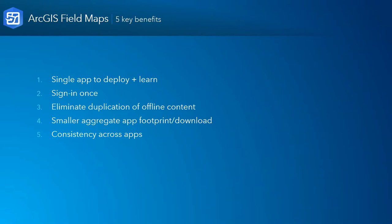The five key benefits: a single app to deploy and learn, both for GIS management and the folks actually using it in the field. You sign in once and get all these capabilities in one app. There's elimination of duplicate offline content — if you wanted to take Collector offline for data collection and also take a map offline just to view, that was two separate downloads, two different maps, two different apps on the same device. Now you have a simple and elegant way to take your maps offline one time and store them on your device.